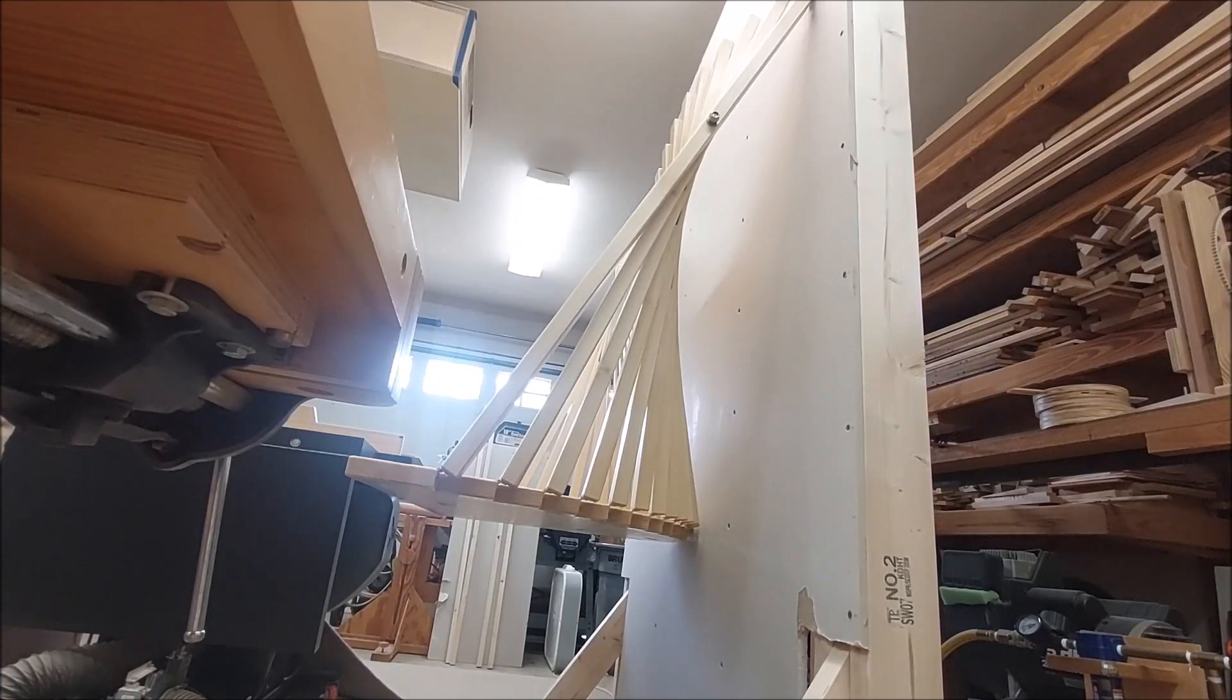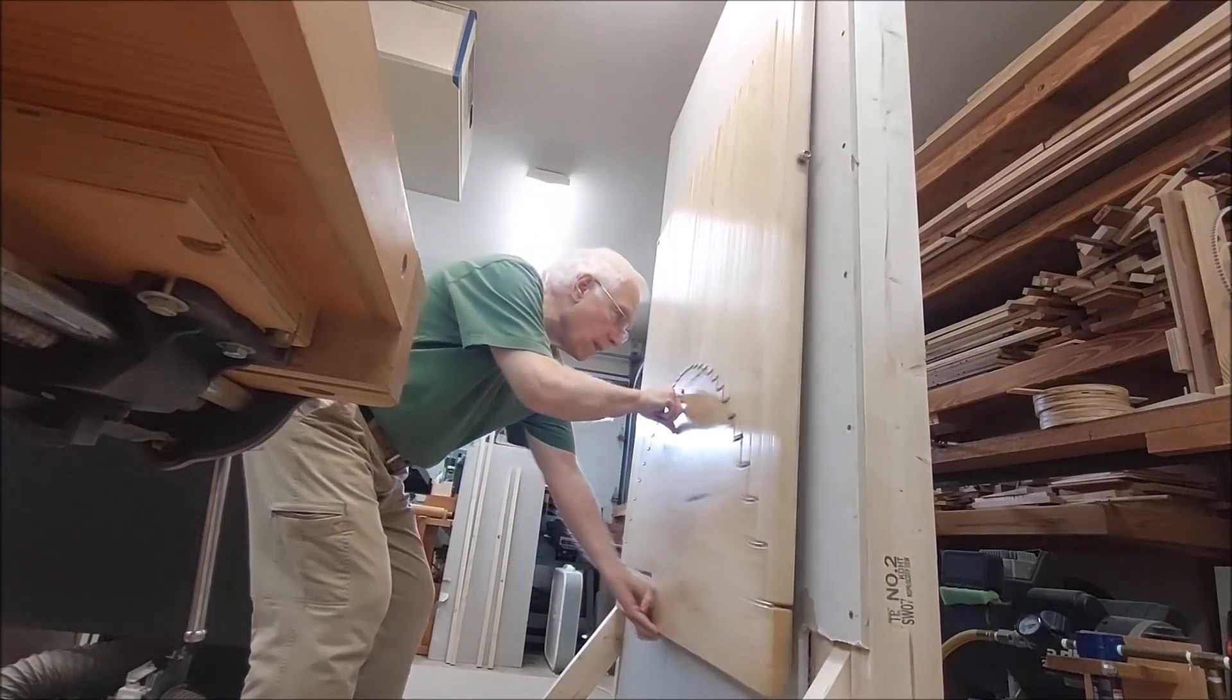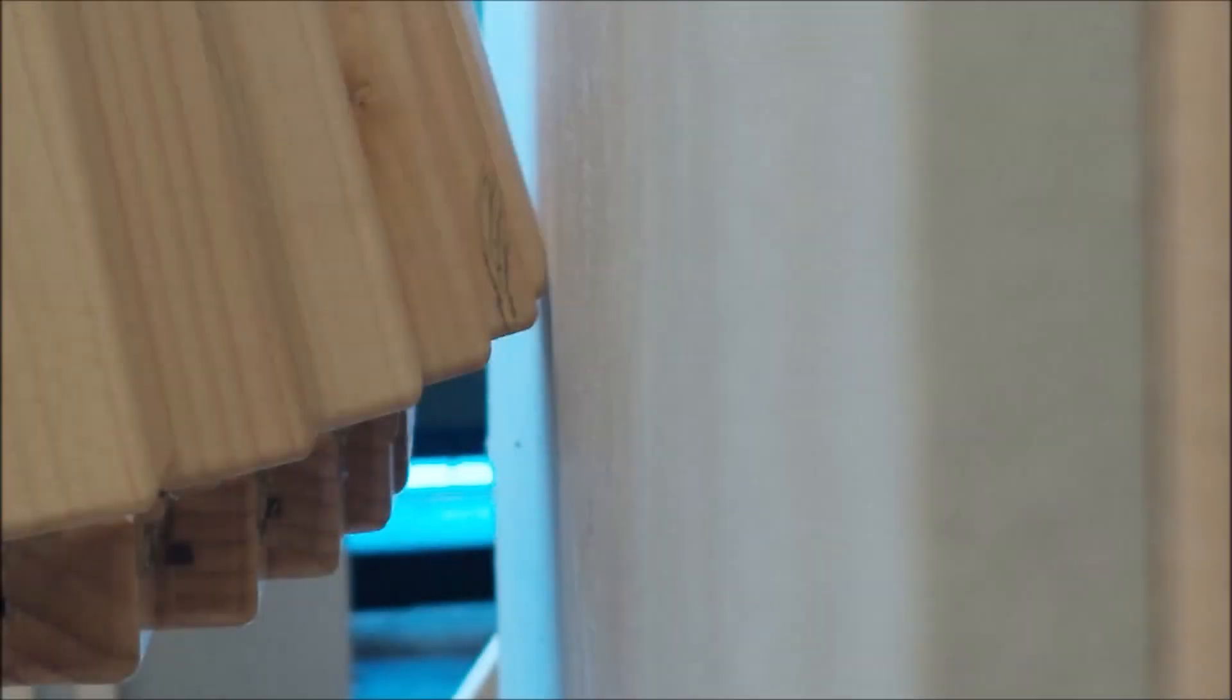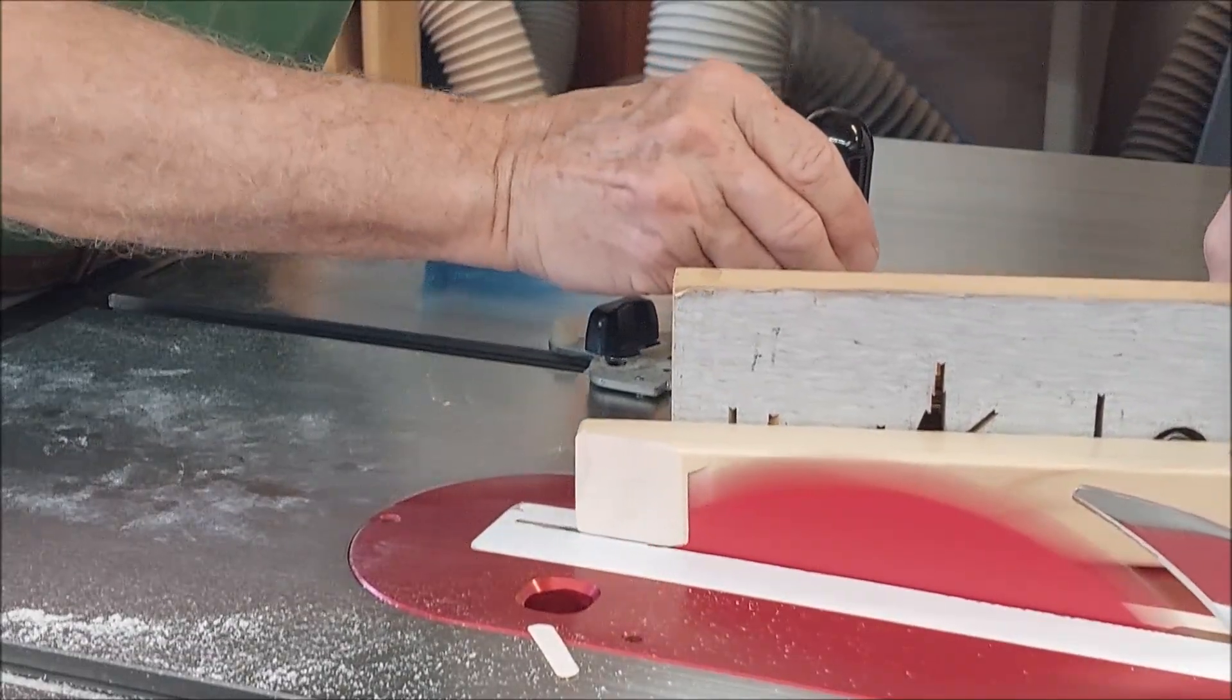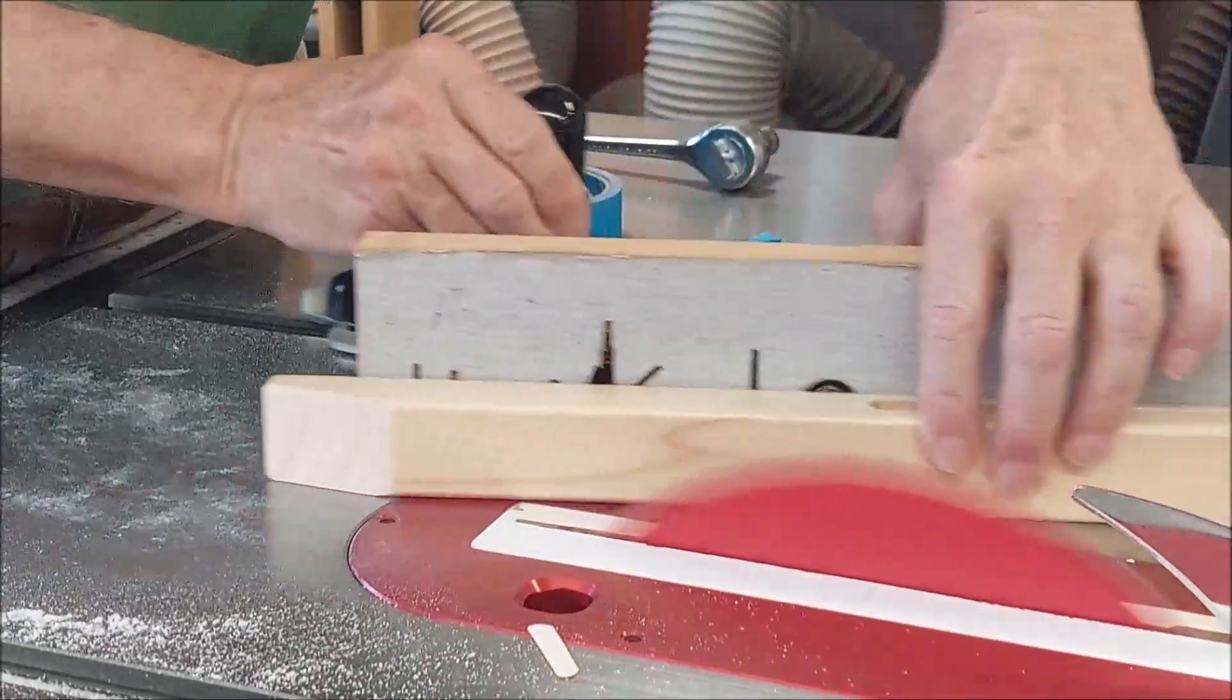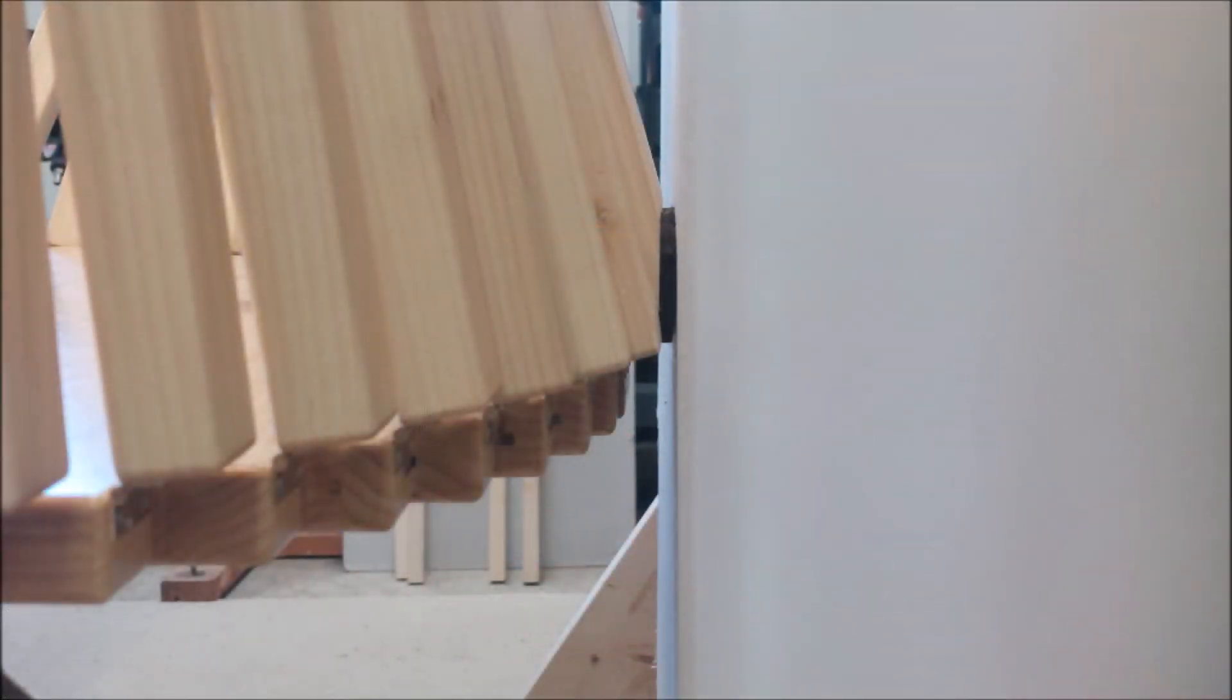With the first actual operation of the desk, three correctable errors became apparent. The first error was how the desk met the wall at a single sharp point. This was corrected by taking off the four middle slats and cutting them off at a sharp angle that would meet the wall flat.